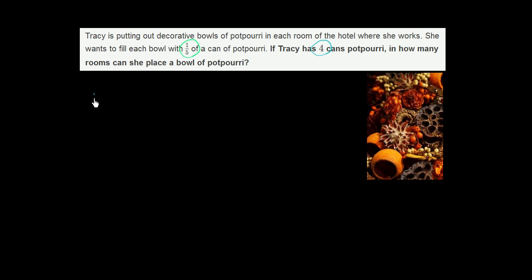So she has four cans, and she wants to divide these four cans into groups of 1/5 of a can. If you have four of something and you're trying to divide it into groups of a certain amount, you would divide by that amount per group. So you want to divide four by 1/5. You want to divide four cans of potpourri into groups of 1/5.